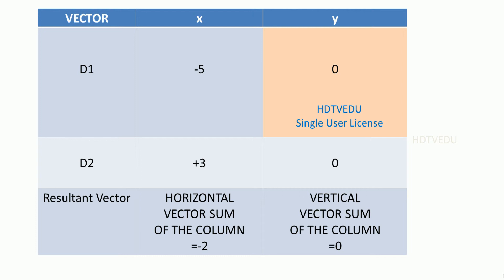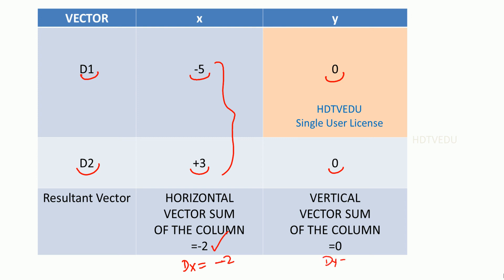Let's put it all together. Vector d1: x-component is negative 5, y-component is 0. Vector d2: x-component is positive 3, y-component is 0. When we add negative 5 and 3, we get negative 2. The y-component is 0. So the resultant x is negative 2, and the resultant y is 0.